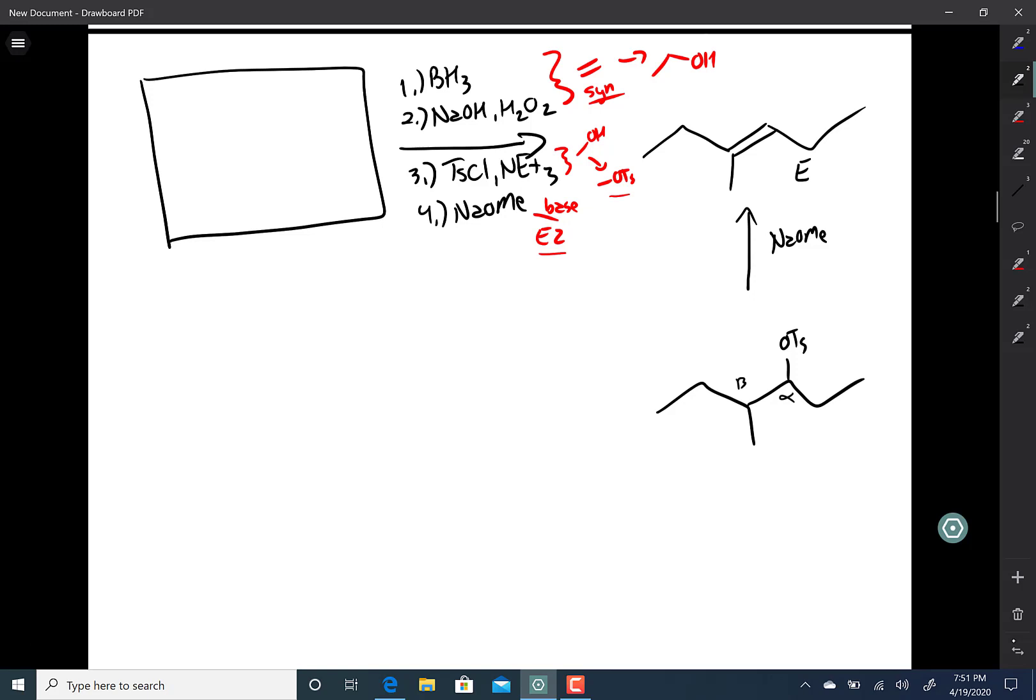Now we need to set the stereochemistry to make sure we get just that diastereomer, and for that we use the anti-coplanar rule. Now you choose a stereochemistry for the OTs - it could be a wedge, could be a dash, it doesn't matter. So I'm going to choose that OTs to be a wedge. When you choose that OTs group to be a wedge, then the hydrogen that you draw in, I'm going to say down here, has to be a dash.